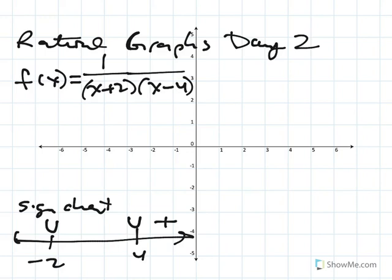If you pick something bigger than 4, both factors are going to be positive, so the whole thing is positive. If you pick something way less than negative 2, both factors are negative, so their product is positive. But something less than 4 but bigger than negative 2 makes this factor negative while this one is positive, so the product is negative.